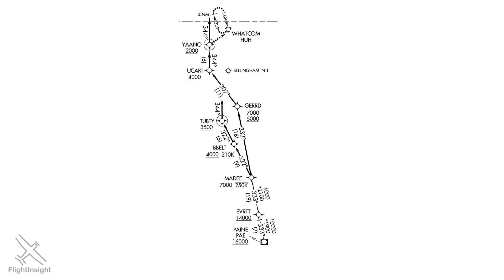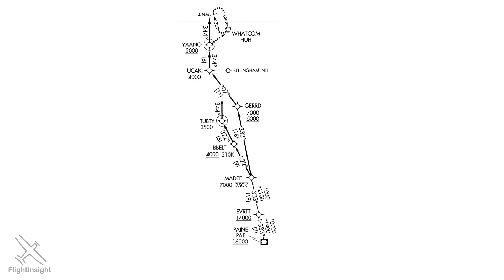There are two branches or routes on this procedure. An arrival will typically be assigned by a center or approach controller prior to getting assigned and cleared for the approach. The branch of this arrival that you fly will depend on if the destination airport is using the north or south runway. ATC will tell us which runway is in use so we know which route to fly.